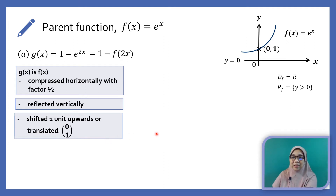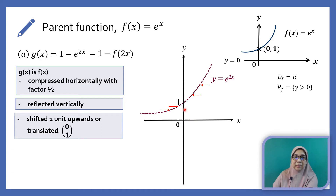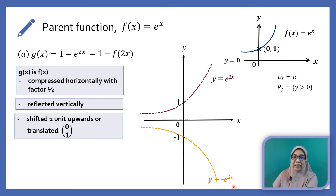Let's see how the transformation is done. Here I have already compressed f(x) horizontally with factor half — the graph is nearer to the y-axis, and observe that the point (0, 1) remains the same. Next, we need to reflect the graph vertically — that is, reflect across the x-axis. This gives us the shape y equals negative e to the power of 2x.